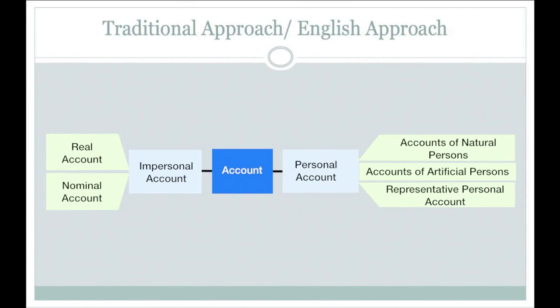We have another classification under impersonal accounts, with two types: real account, which generally indicates the properties of the business; and number two, nominal account, which generally indicates the expenses and losses, and incomes and gains.